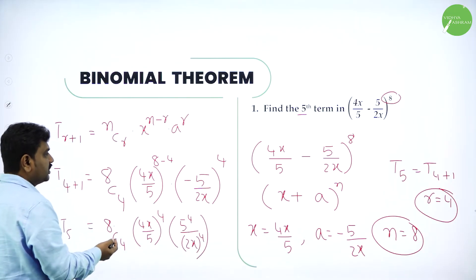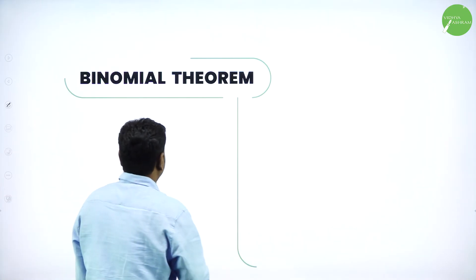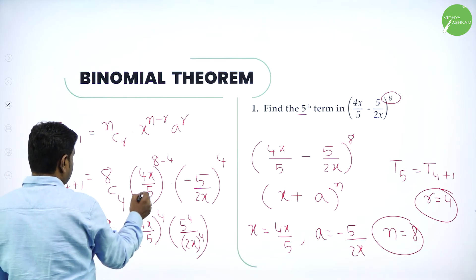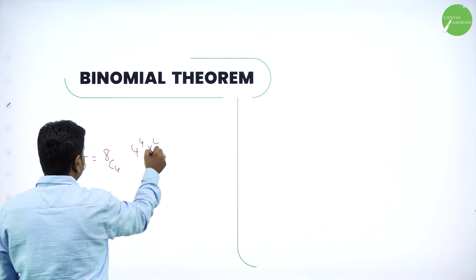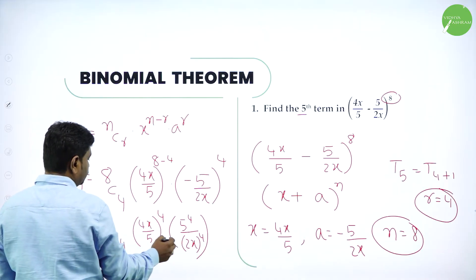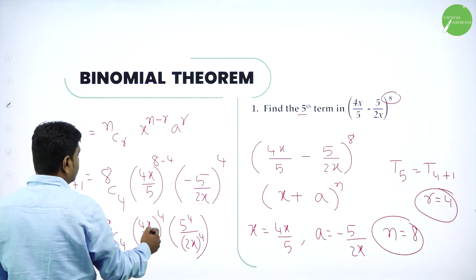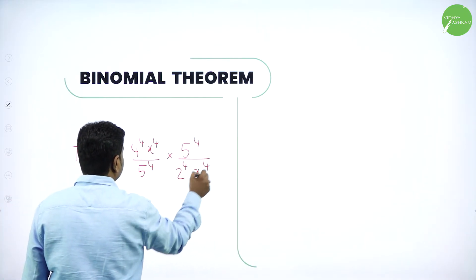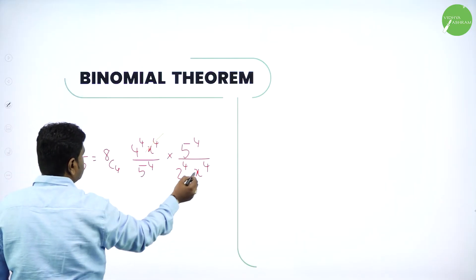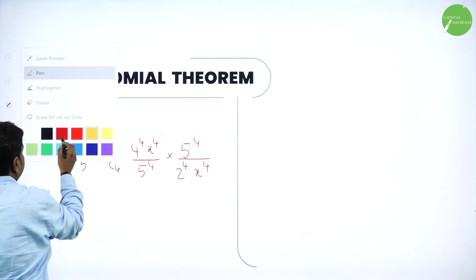So we have 8C4 times 4 power 4 times x power 4 divided by 5 power 4, times 5 power 4 divided by 2 power 4 times x power 4. Now cancel the terms: x power 4 cancels with x power 4, and 5 power 4 cancels with 5 power 4.